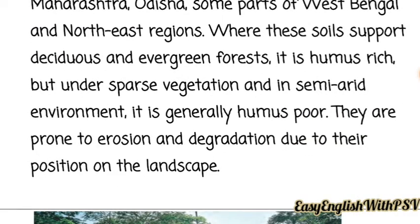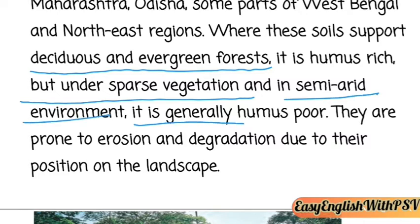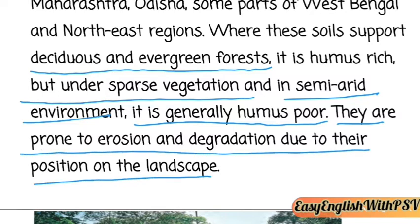Laterite soils support deciduous and evergreen forests and are humus-rich. However, under sparse vegetation and in semi-arid environments, they are generally humus-poor. They are prone to erosion and degradation due to their position on the landscape. As seen in pictures, the remaining hard portion is laterite soil, while the rest is washed away by heavy flow of water.